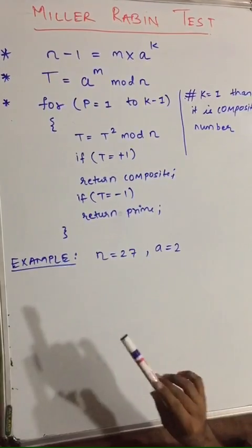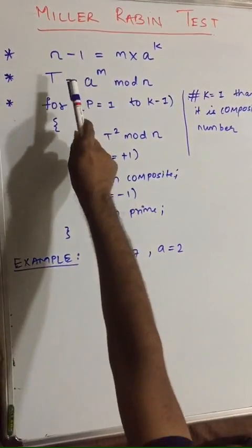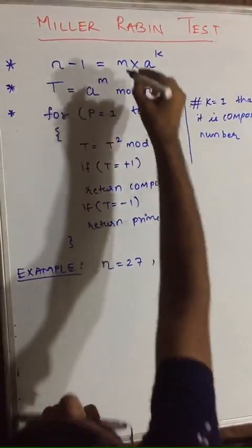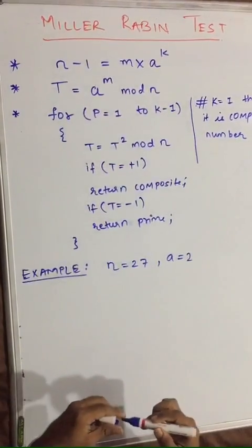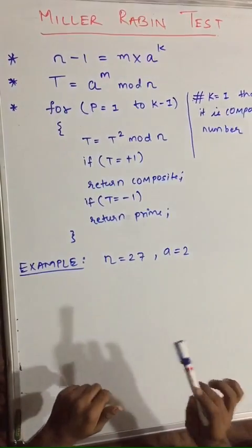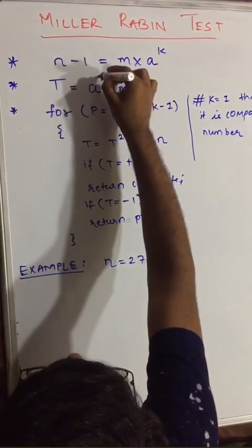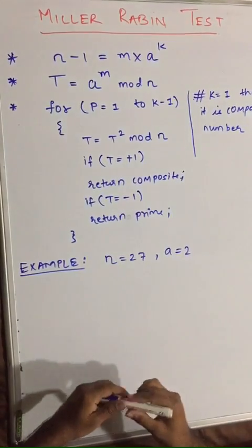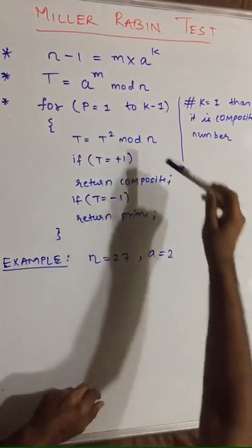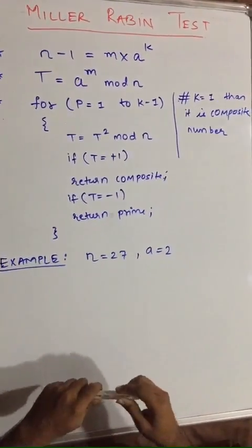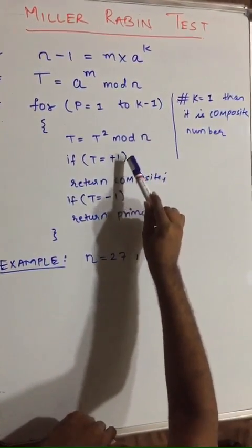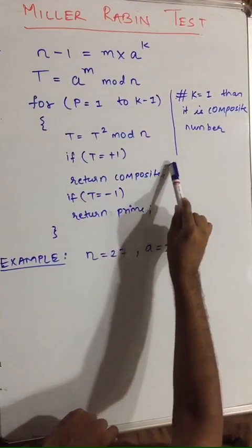Whenever you are given any equation, first of all you would solve: n minus 1 is equal to m into 2 raised to k. Step two is to calculate t, which would be equal to a raised to m mod n. The third step is: for p equal to 1 to k minus 1, this algorithm says t is equal to t squared mod n. If this equation returns 1, we directly say the number is composite.